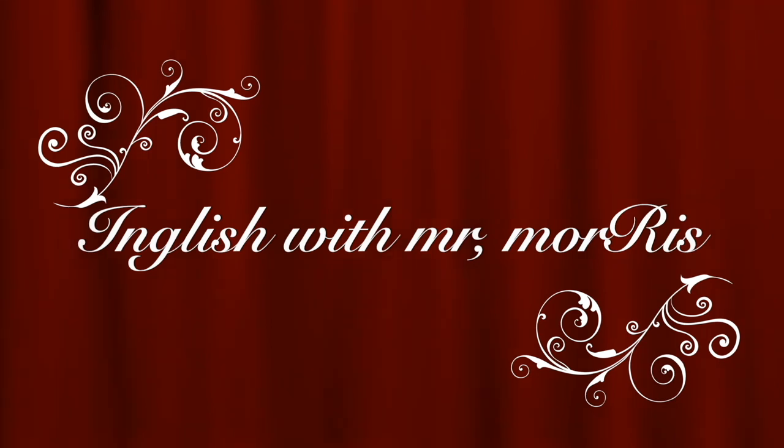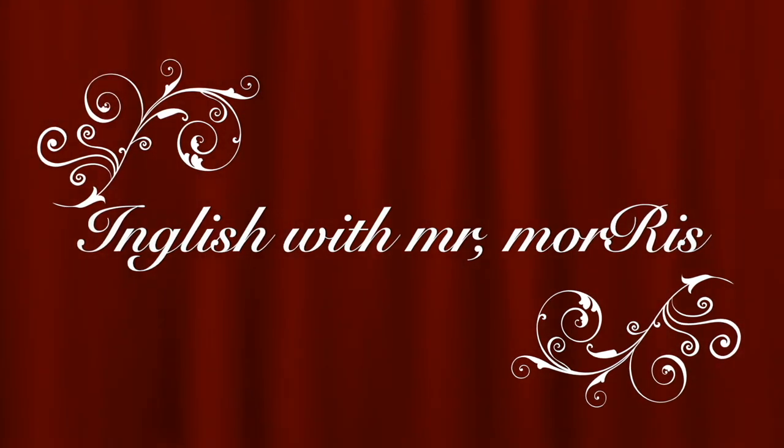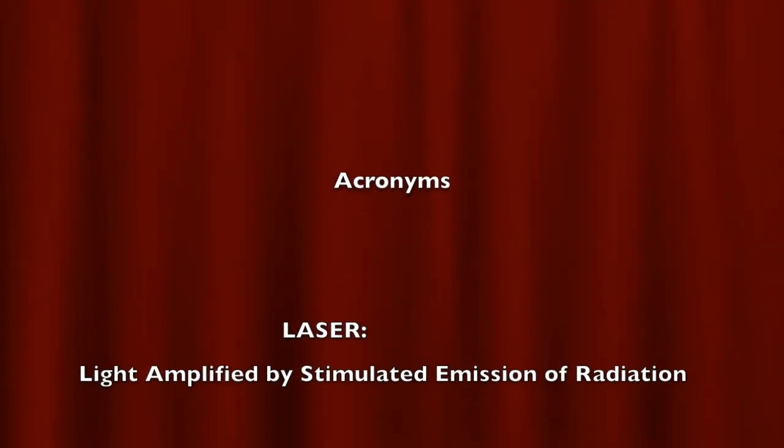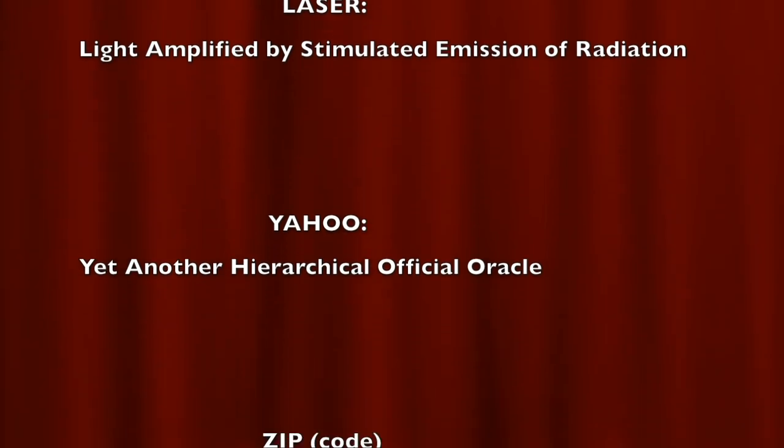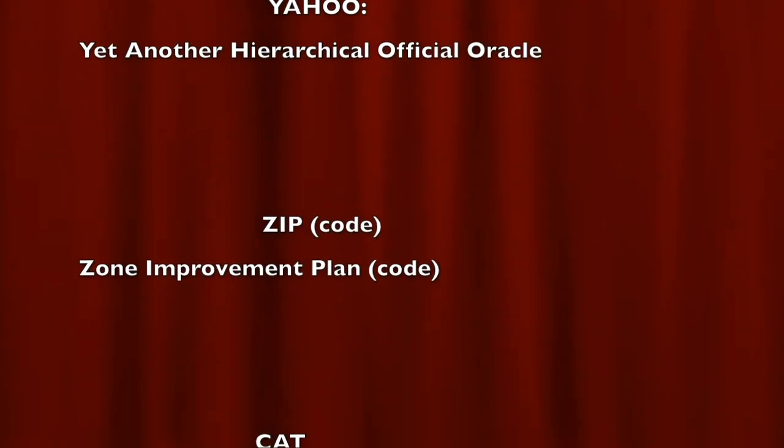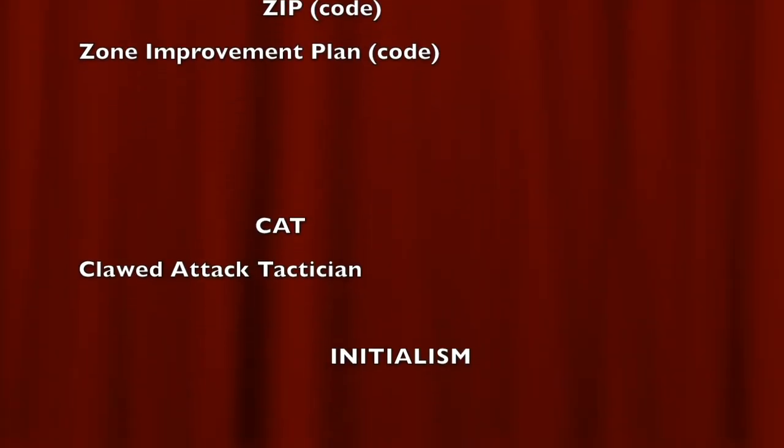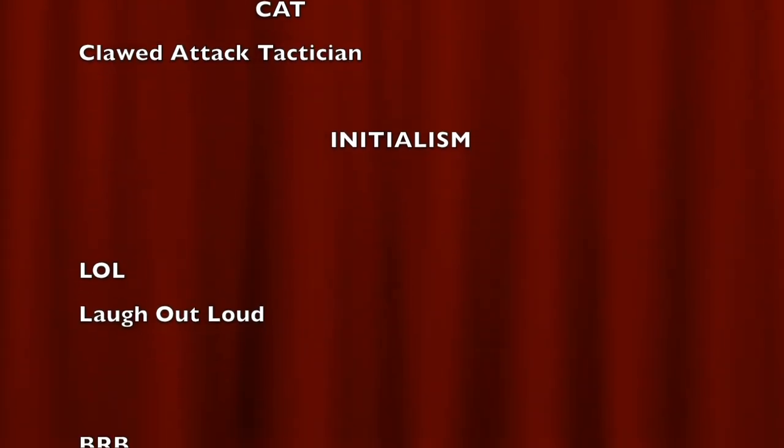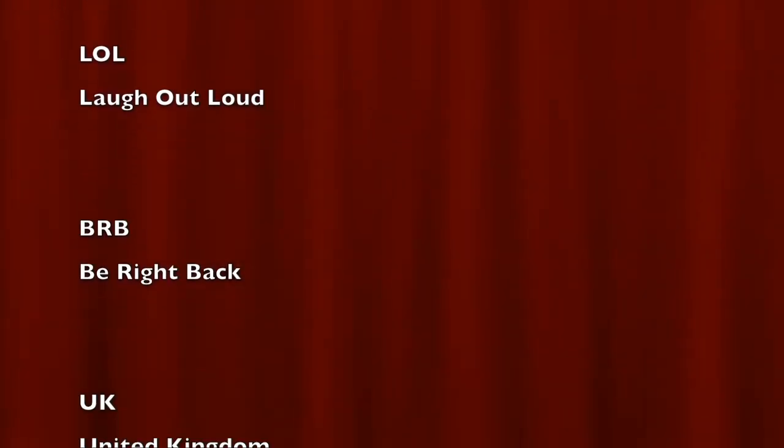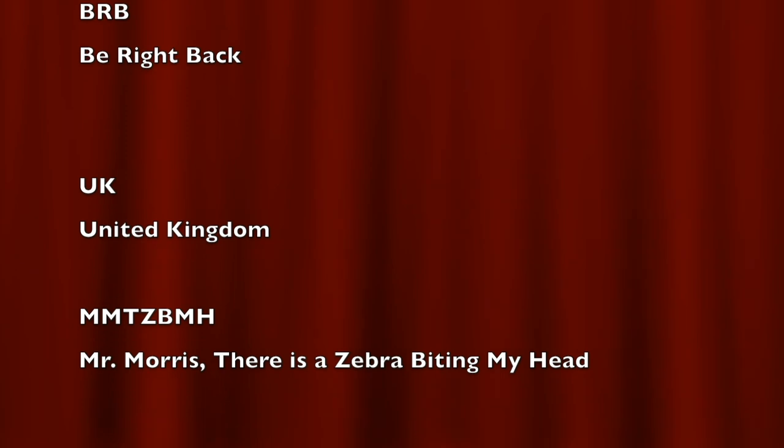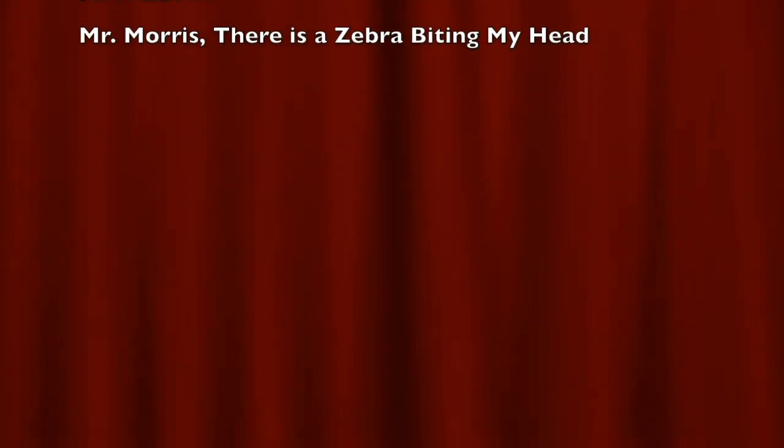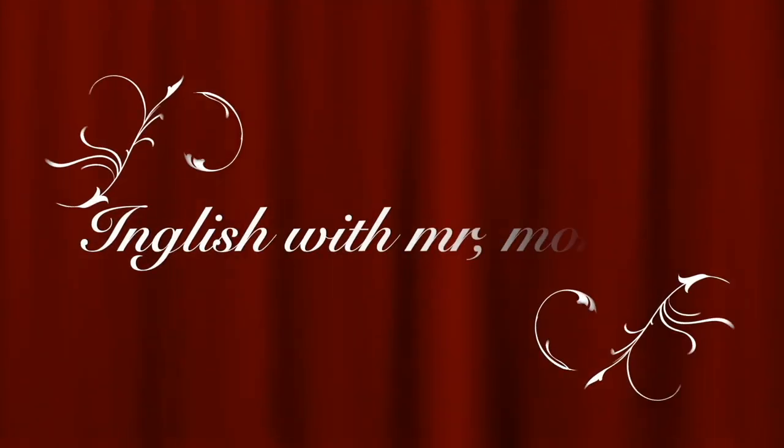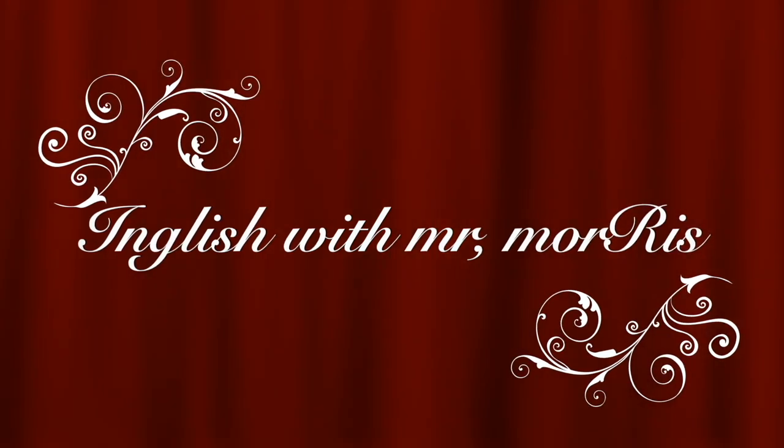And now we present to you, English with Mr. Morris. An acronym is when you take the first letters of a phrase and put them together to create a new word. An initialism, on the other hand, is when you take the first letters of several different words and you still pronounce them as those letters. This has been another presentation by English with Mr. Morris.